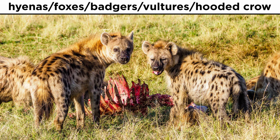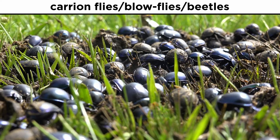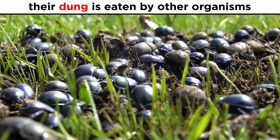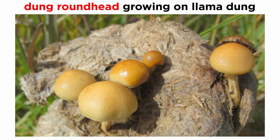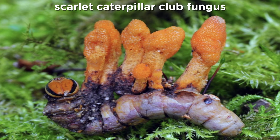These animals range from foxes and badgers to birds such as the hooded crow. They also include invertebrates, such as carrion flies, blow flies, and various beetles. Their dung is, in turn, eaten by other organisms, particularly dung beetles and burying beetles. Some fungi, including the dung roundhead, grow out of dung, helping to break it down. Other fungi even help break down animal matter.